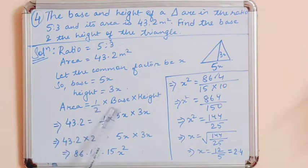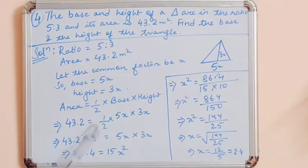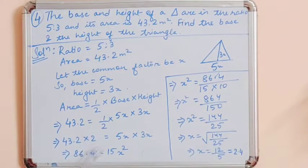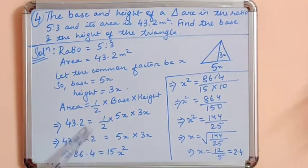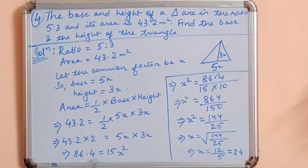Using area = half into base into height: 43.2 = ½ × 5x × 3x. Multiplying both sides by 2: 43.2 × 2 = 5x × 3x, so 86.4 = 15x². Therefore x² = 86.4 / 15. Removing the decimal gives x² = 864 / 150, which simplifies to x² = 144 / 25.